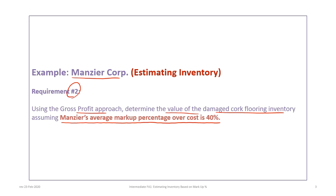This is different from gross profit. Gross profit is how much profit exists after deducting costs from sales, but markup percentage is how much markup over cost the sales price is determined to be.